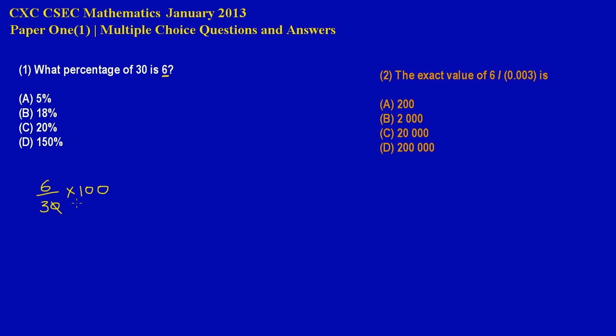And 10 into 100 goes ten times. If you notice here I have a three, so I could say three into itself goes once and three into six goes two times. And then I could just multiply across since we have nothing else to cancel out. I'm saying two times ten and that will be equal to 20.